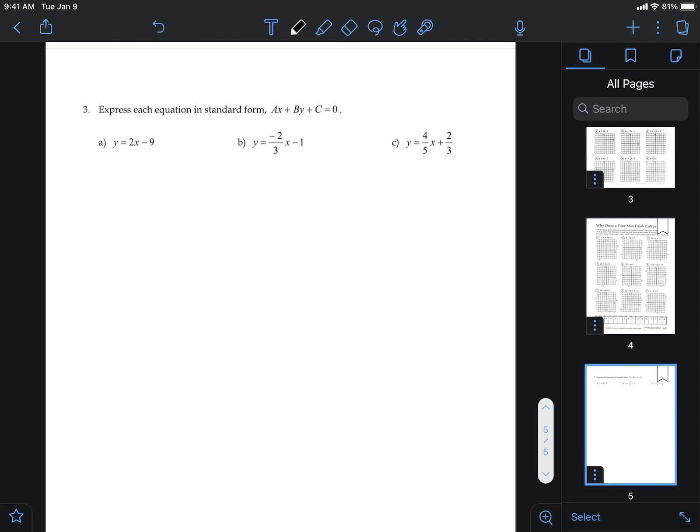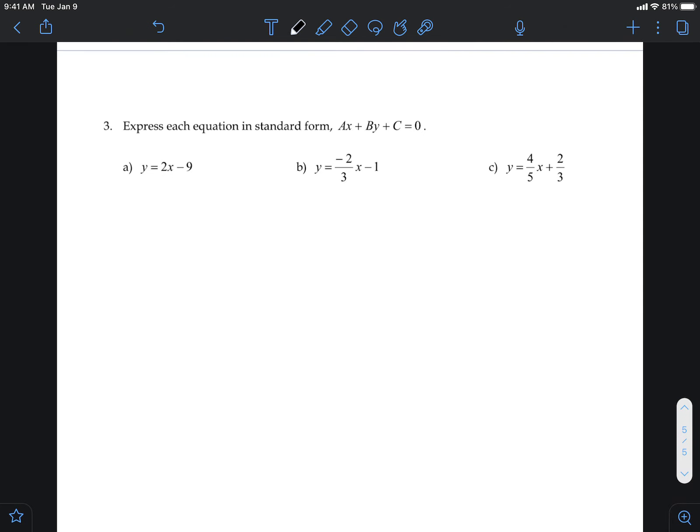Before I go anywhere with this particular question, I want you to recall some of the rules. Notice what you're seeing here. This is standard form, right? That's what it looks like. It's Ax plus By plus C equals zero.